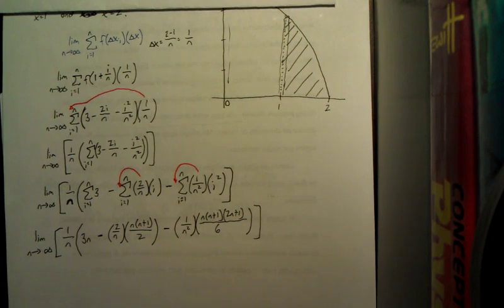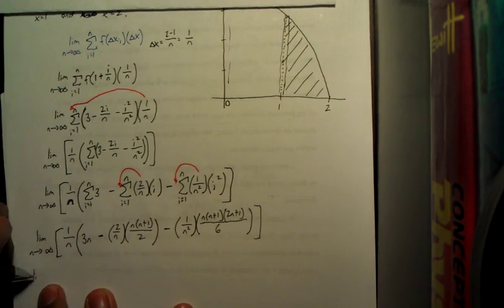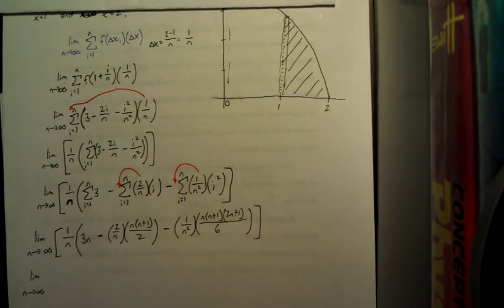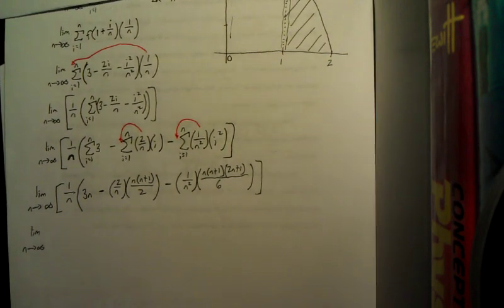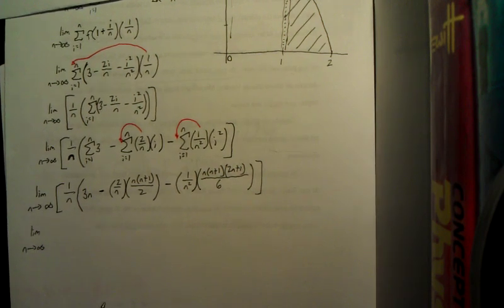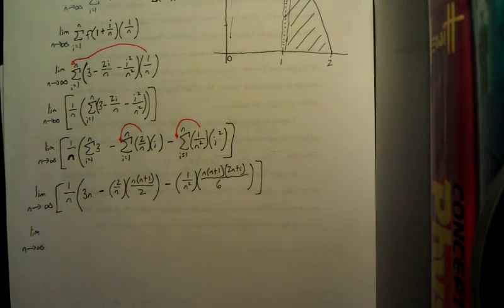So i squared is n times n plus 1 times 2n plus 1, all divided by 6. So you get that, and after a whole lot of distribution and simplifying these things down, I don't want to do it in this video because I've still got to cover some extra properties.